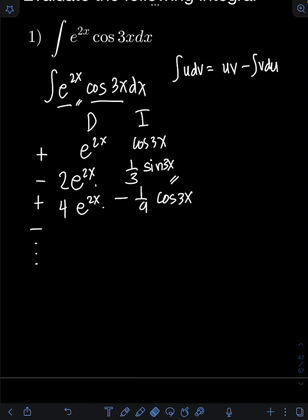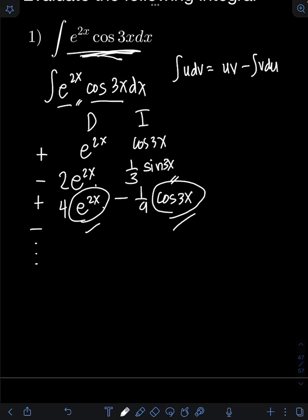When do we stop differentiating and integrating? We can stop now because this falls under Case 2 of the DI method, where we have created the form of the original integral. The product of the terms in the last row is e raised to 2x times cosine 3x, which resembles the original integral. As long as the main functions e raised to 2x and cosine 3x are the same, that is when we stop.